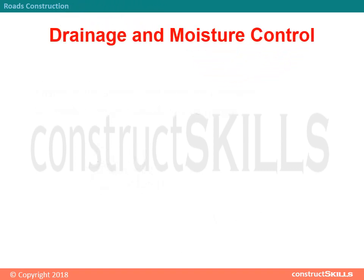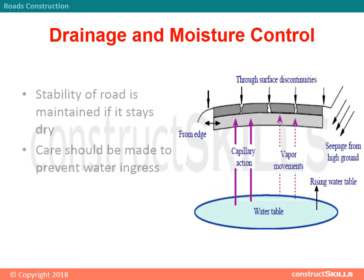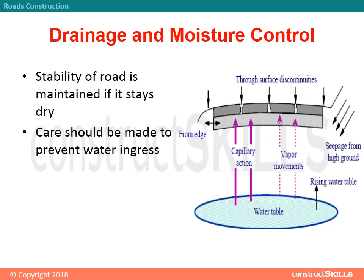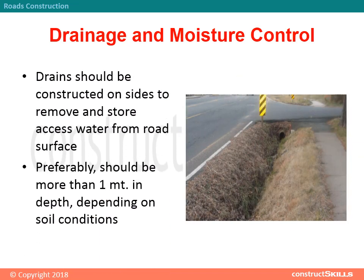Drainage and Moisture Control: The stability of a road is maintained if it stays dry. Care should be taken to prevent water ingress. Drains should be constructed on the sides to remove and store excess water from the road surface. Preferably, drains should be more than 1 meter in depth, depending on soil conditions.